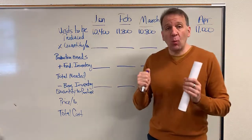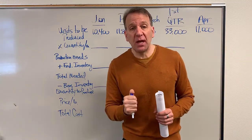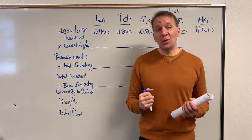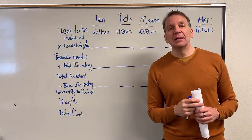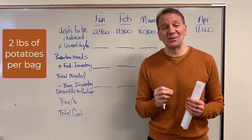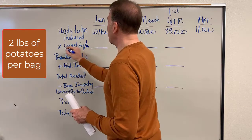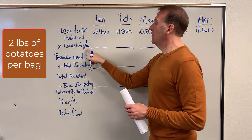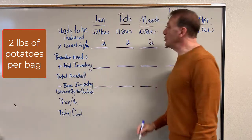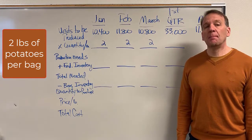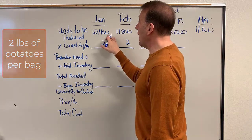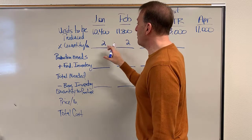The first step when preparing a direct materials budget is to convert production units into the material. When you're making potato chips, you need potatoes. For each bag, we need two pounds of potatoes per bag. So this quantity per unit has to be given to you. Now we know how many we're going to produce, and each one needs two pounds.